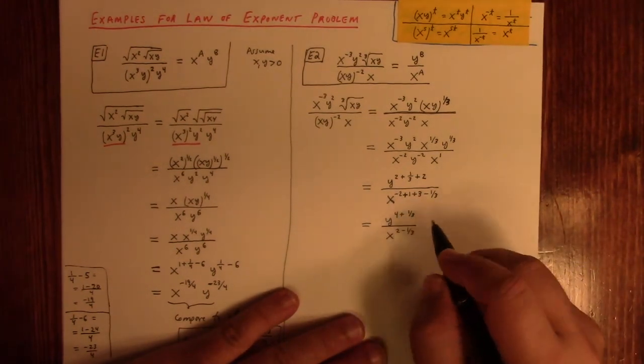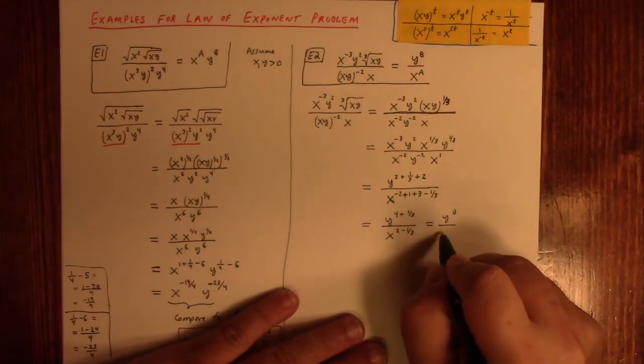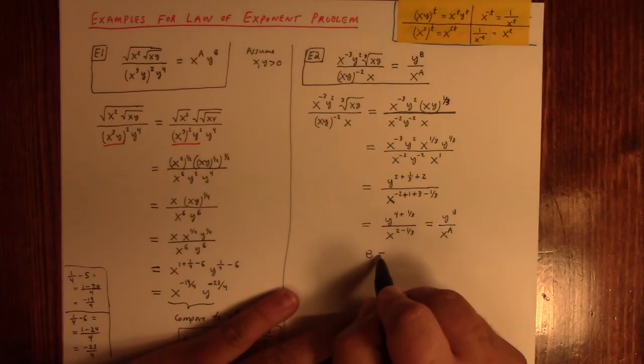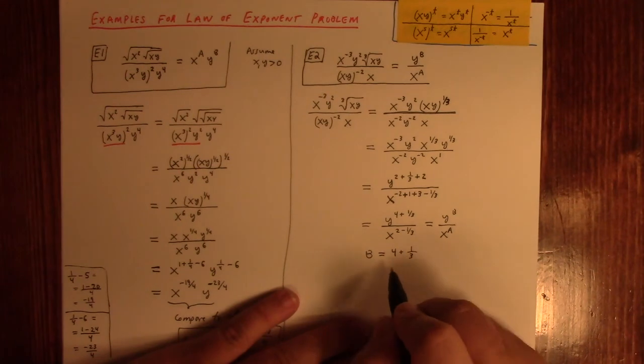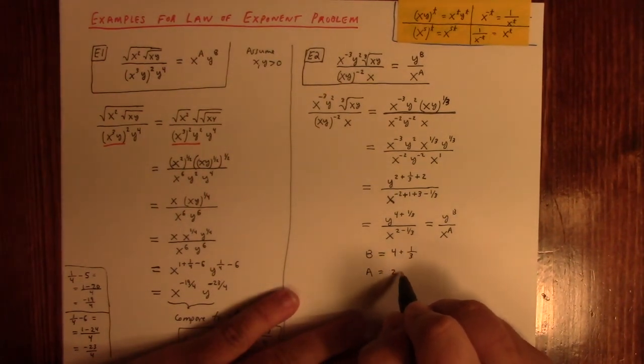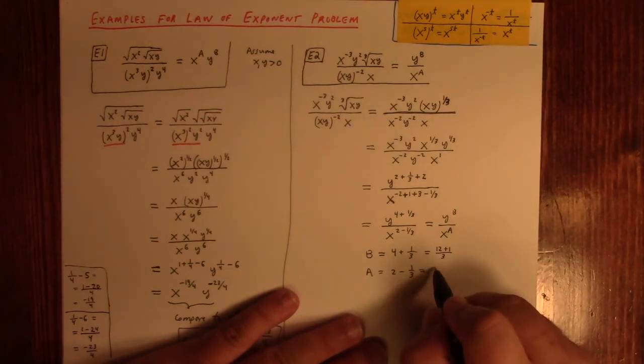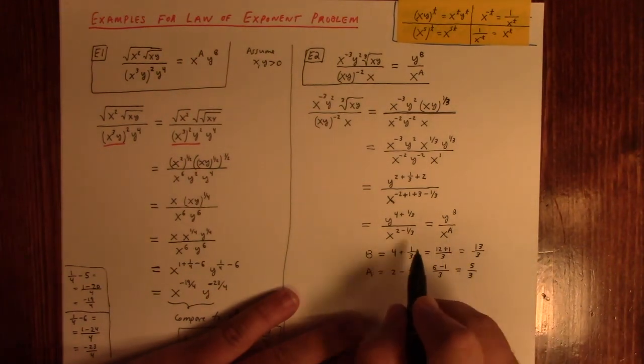And, so, I could simplify those, right? But, I'm just going to go ahead and compare that to y to the b over x to the a, because my goal is to find a and b, right? So, I can look at these, I can compare, I can say, aha, b is 4 plus 1 third, which I can simplify further in just a second here. And, a is 2 minus 1 third, right? Of course, that's 12 plus 1 over 3. And, this is, you know, 6 minus 1 over 3, right? So, we've got 13 over 3, and we've got ourselves a 5 over 3. There you go.